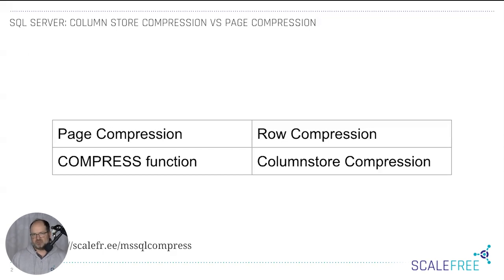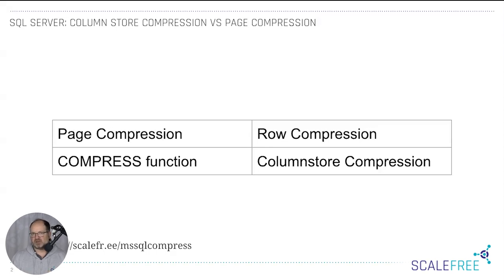In a Data Vault model there's a clear pattern here. Bridge tables use column store compression because we aggregate a lot — we put views for facts on top, and via those views we execute queries against bridge tables. Non-historic links and dependent chart links are also candidates, since when there's no grain shift involved you can create a view for the fact entity directly on top of the non-historic link or the dependent chart link.